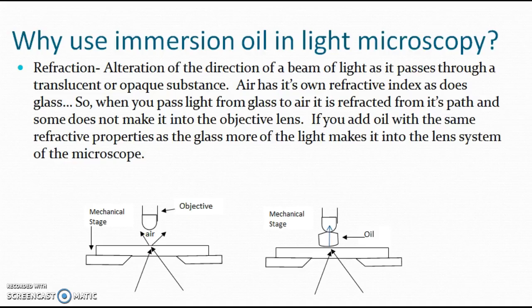Why do you use immersion oil in light microscopy? It has to do with a concept called refraction. Light moving through air or through glass or through oil will move at different speeds, and as it goes through those refractive properties they can move and alter their projection.